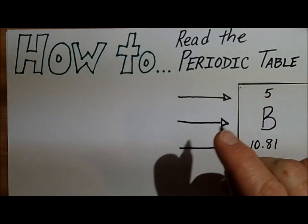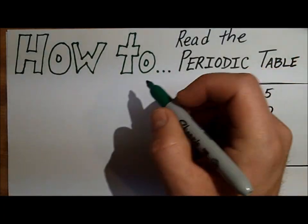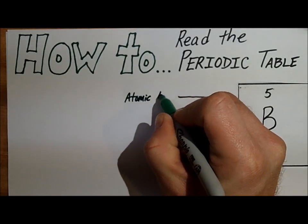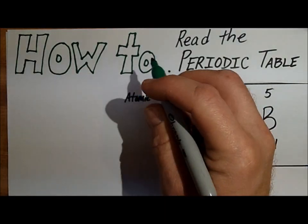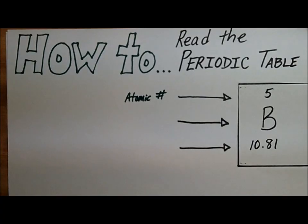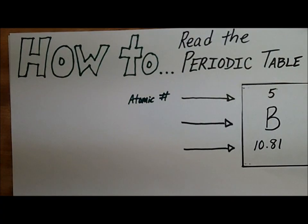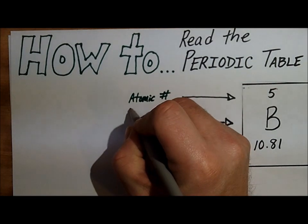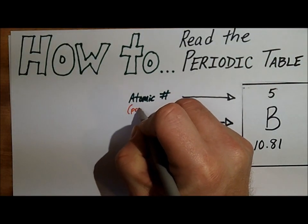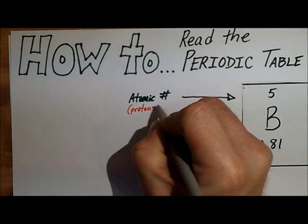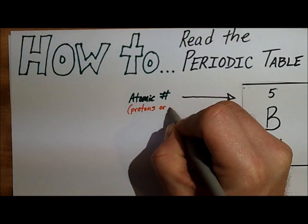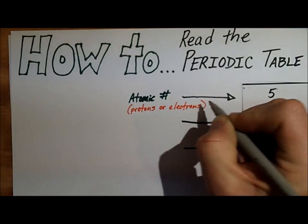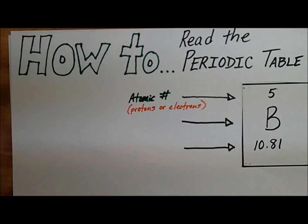The top number is called the atomic number. The atomic number tells you the number of protons that would be in that element — so that's going to be the number of protons. It also gives you the number of electrons. The top number is the atomic number.